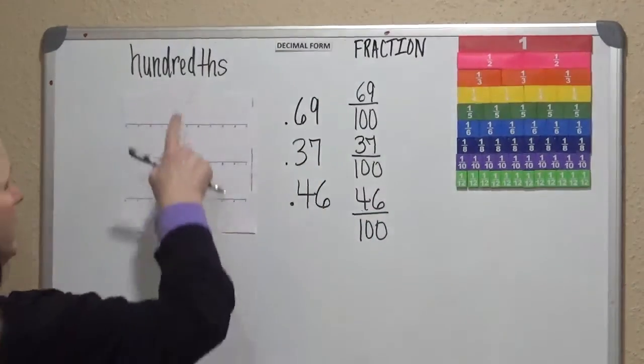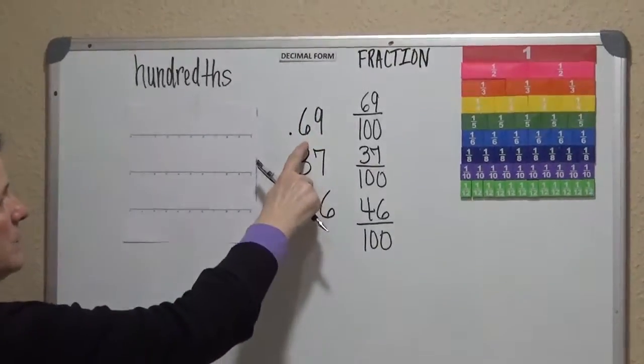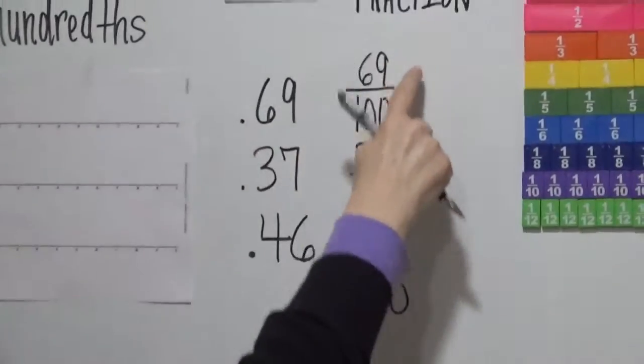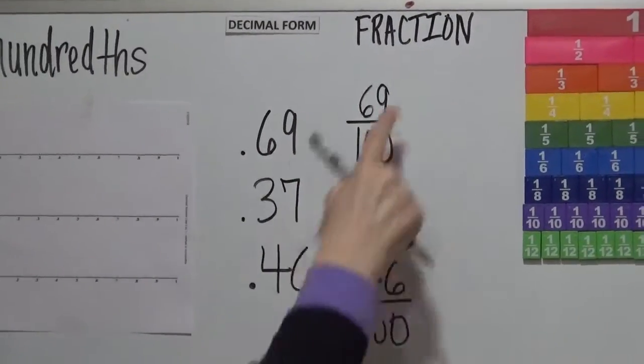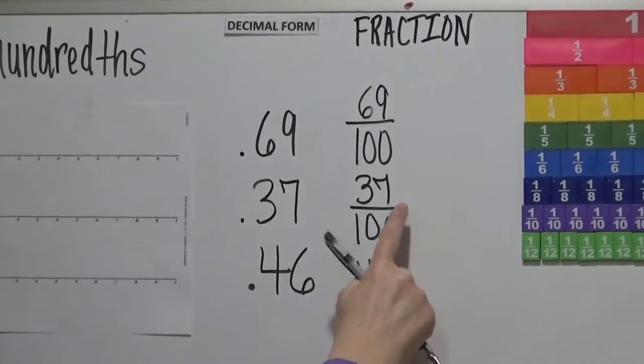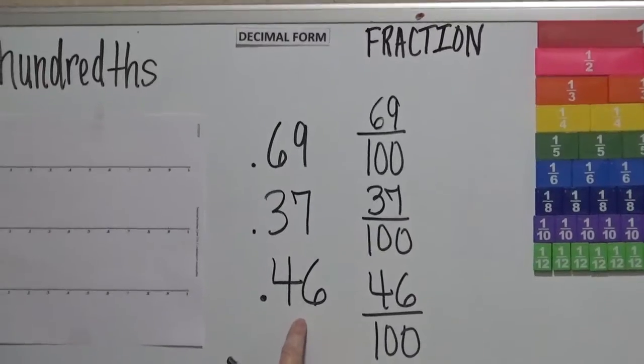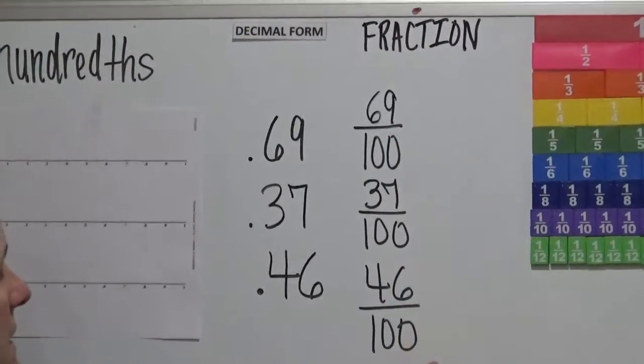So we're going to go ahead and get started. The decimal form of this would be 69 hundredths. The fraction would be 69 out of 100. Decimal form, 37. Fraction, 37 out of 100. Decimal form, 46, and fraction 46 out of 100.